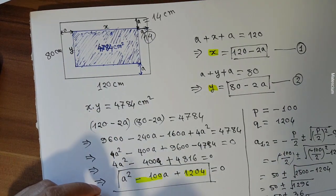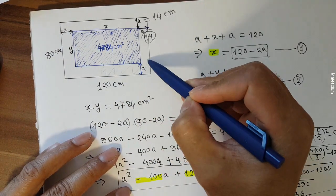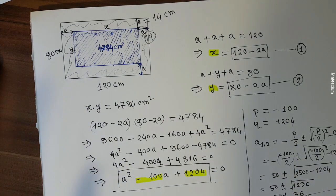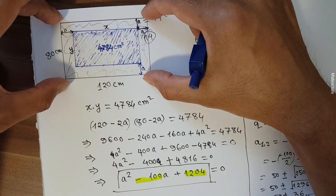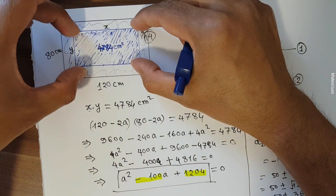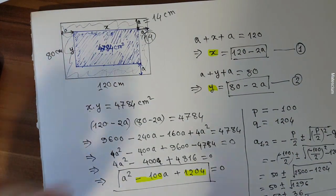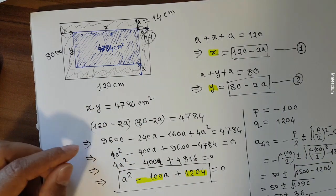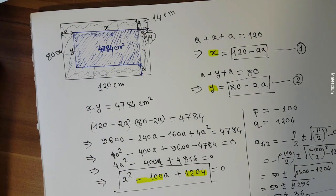So a equals 14 centimeters. As a homework problem: can you find the surface area of the region between the two rectangles? Hint — consider the surface area of the larger rectangle and subtract the surface area of the smaller rectangle. If you find the answer, please let me know in the comment section. Thank you so much for watching, and see you next time — bye bye!